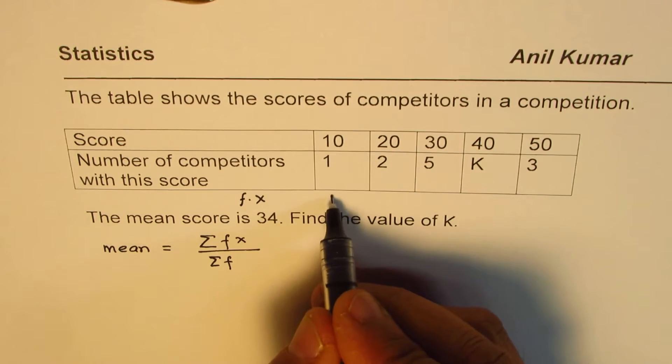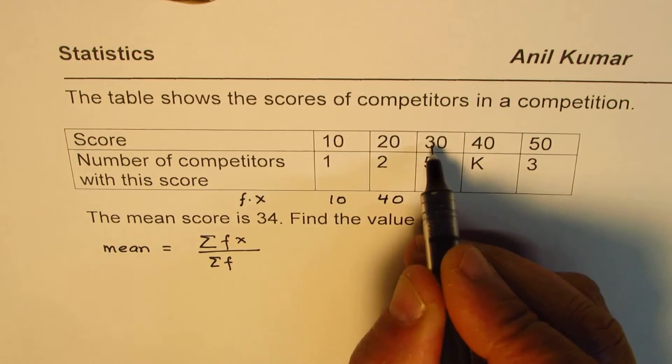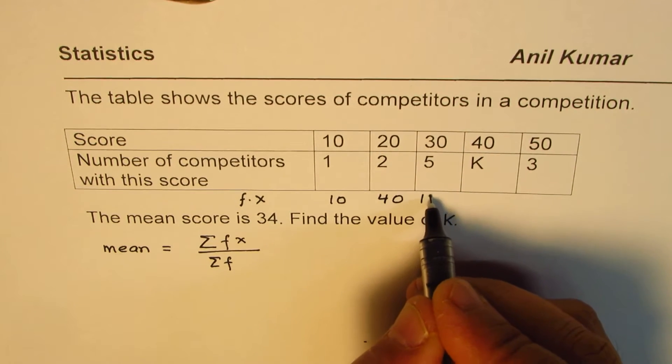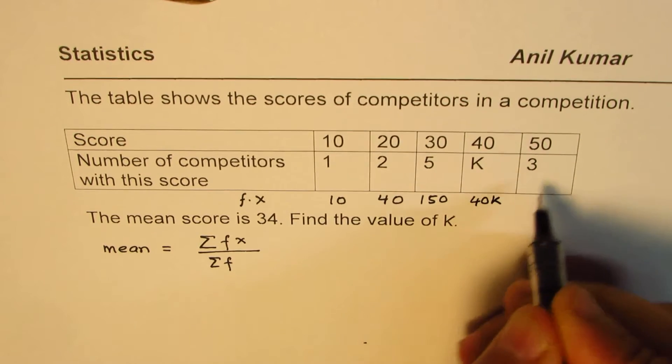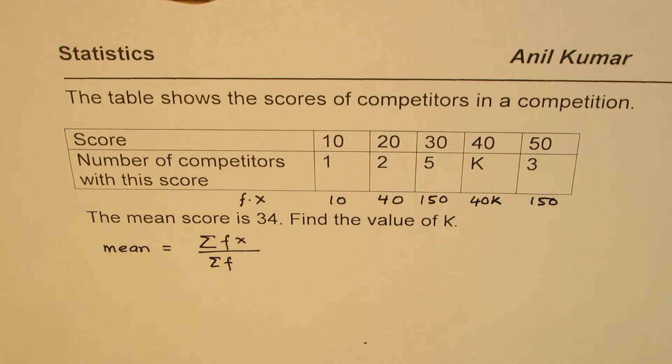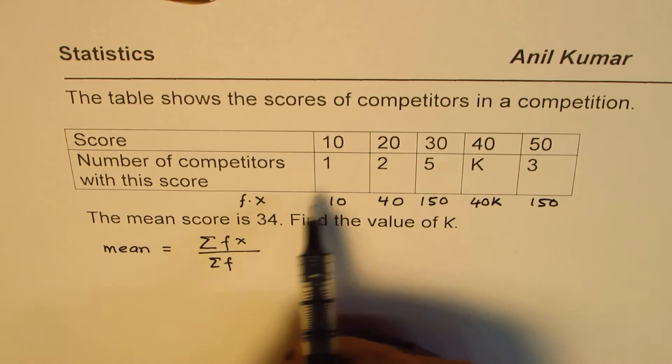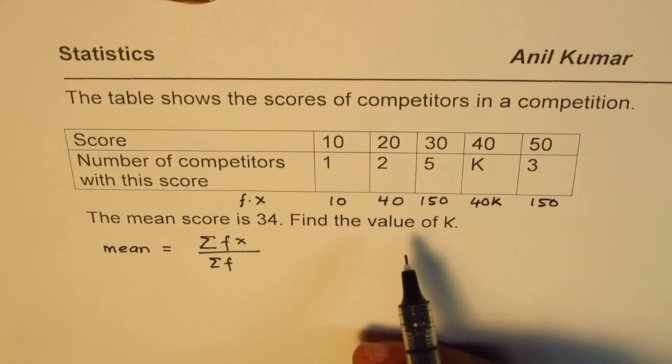So 10 times 1 is 10, 2 times 20 is 40, 5 times 30 is 150. Here we get 40K and here we have 150. So that is the column which shows product of frequency with the score in this particular case.